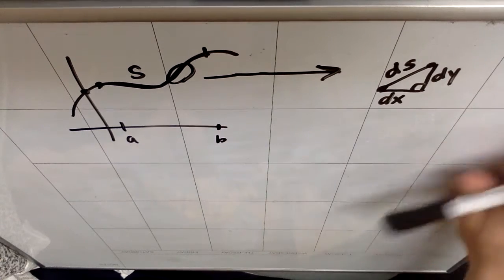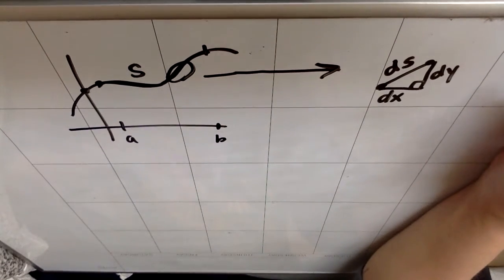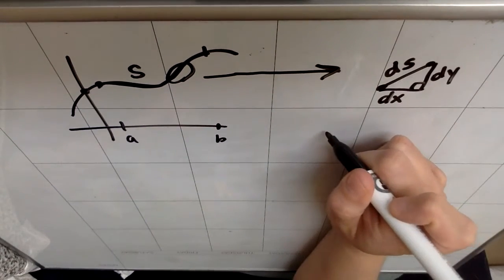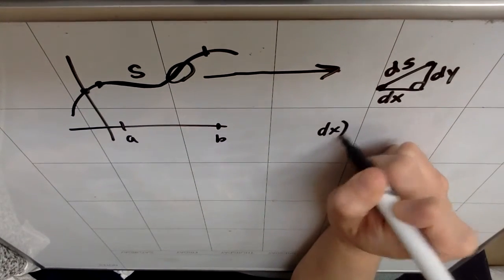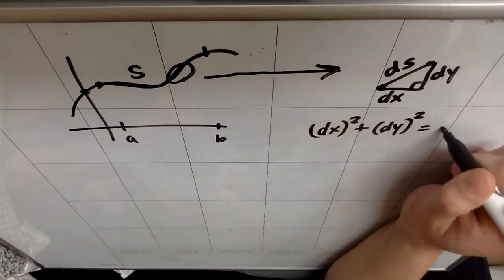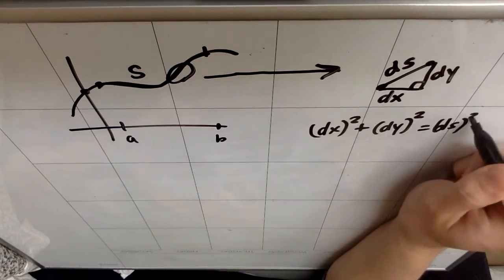Based on what we know from Pythagorean theorem, and we've seen this with arc length of curves that are not parametrically defined, we could say that (dx)² plus (dy)² equals (ds)², because those are the two legs of the triangle.